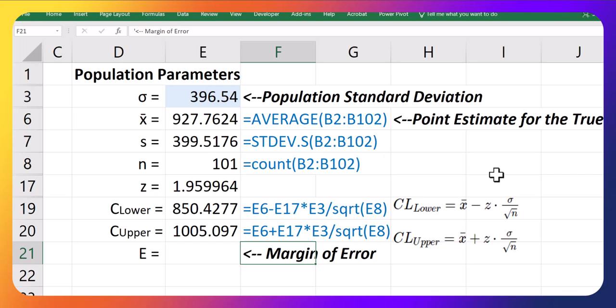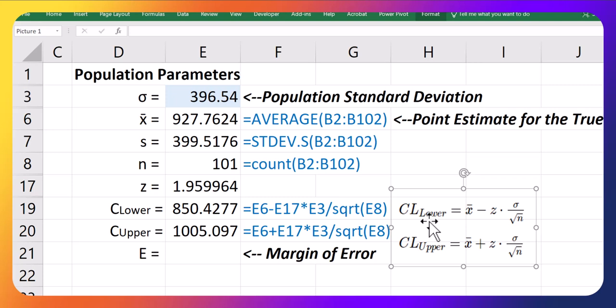Okay, so those are my lower and upper limit for the confidence interval, the 95% confidence interval, with these parameters and these statistics.